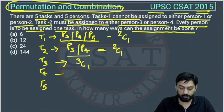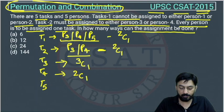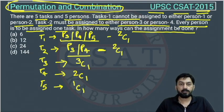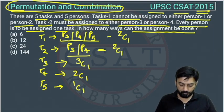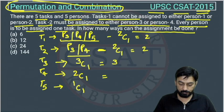For T4, three people are already consumed for T1, T2, and T3, so we are remaining with two people — out of two, one will be selected, that is 2C1. For T5, we are remaining with one person and out of that we select one, that is 1C1. So: 2C1 equals 2, 2C1 equals 2, 3C1 equals 3, 2C1 equals 2, and 1C1 equals 1.